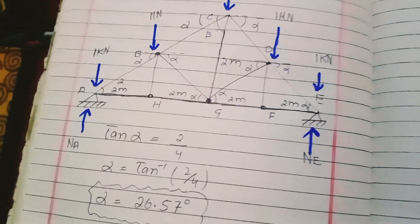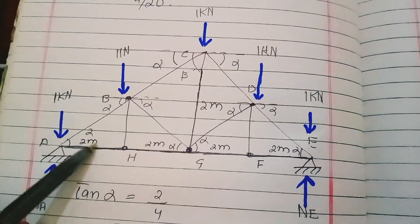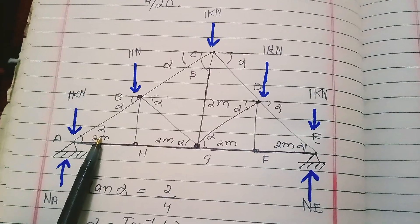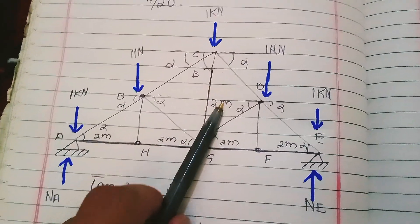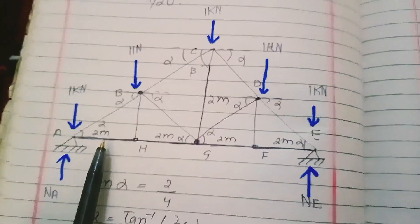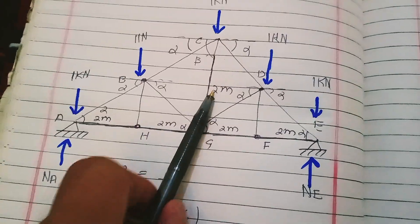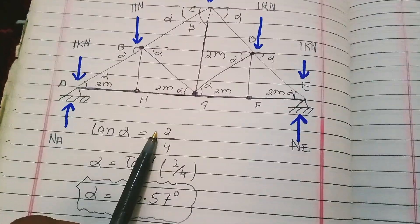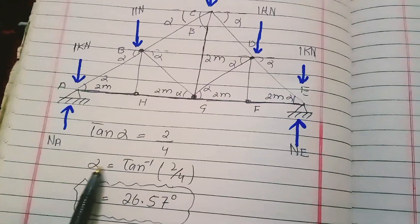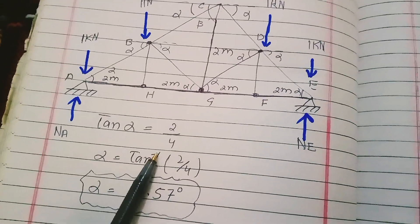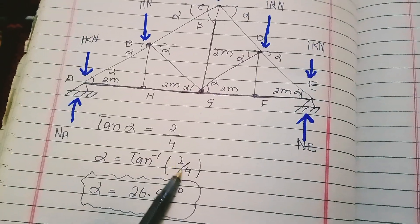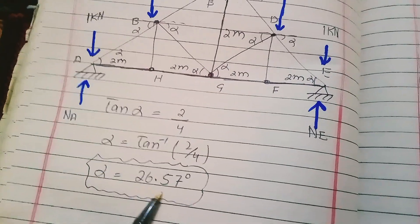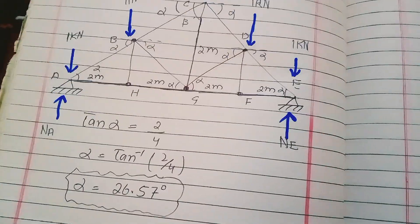First, I want to find the alpha angle. Tangent theta equals opposite side divided by adjacent side. The opposite side is 2 and the adjacent side is 2 plus 2, which equals 4. So tangent alpha equals 2 divided by 4, and alpha equals tangent inverse of 2/4, which gives alpha equal to 26.57 degrees.